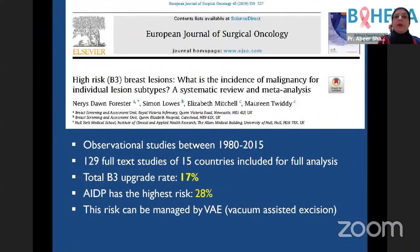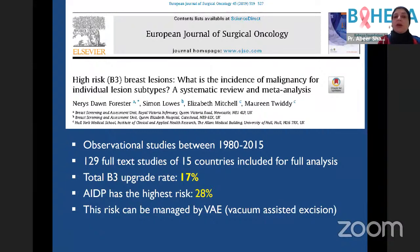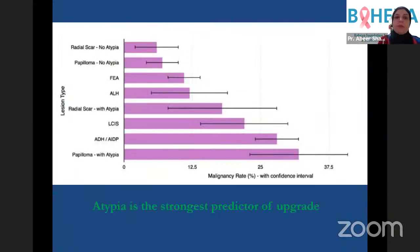A systematic review of 129 full-text studies found that the overall B3 upgrade rate is 17 percent, and that atypical ductal proliferation (ADH) has the highest risk at 28 percent. This risk can be managed by vacuum-assisted excision (VAE) — you don't need surgery; radiologists can sample more of the lesion by vacuum-assisted excision. The study confirmed that atypia is the strongest predictor of upgrade: if a core biopsy lesion shows cytological or architectural atypia, it is more likely to have associated cancer on further sampling.